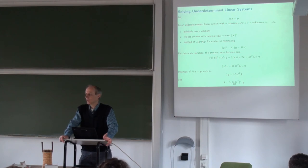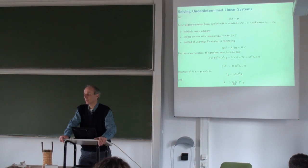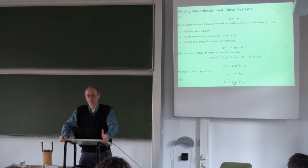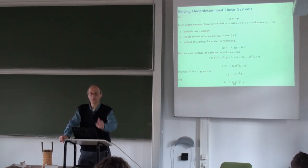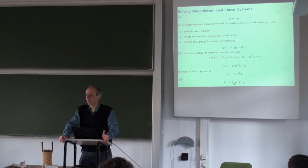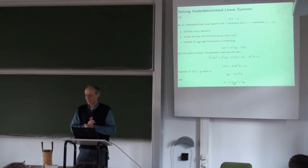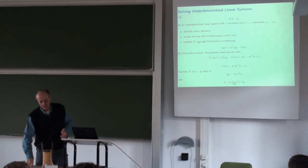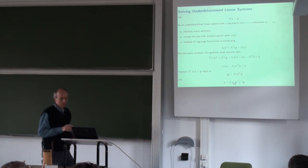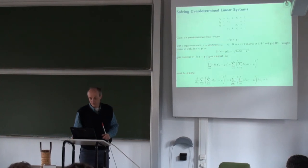What does it mean to 'solve' an over-determined or under-determined system if I just told you they are not solvable? We find the closest approximation to a solution that is possible. That's what we learned last time. So let's go back to the over-determined system.